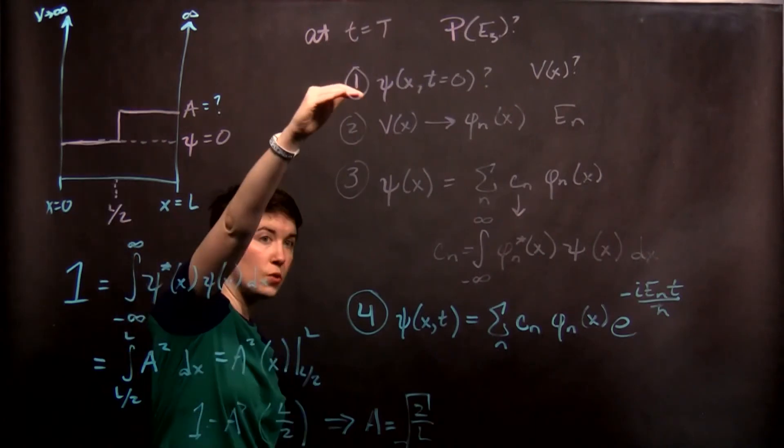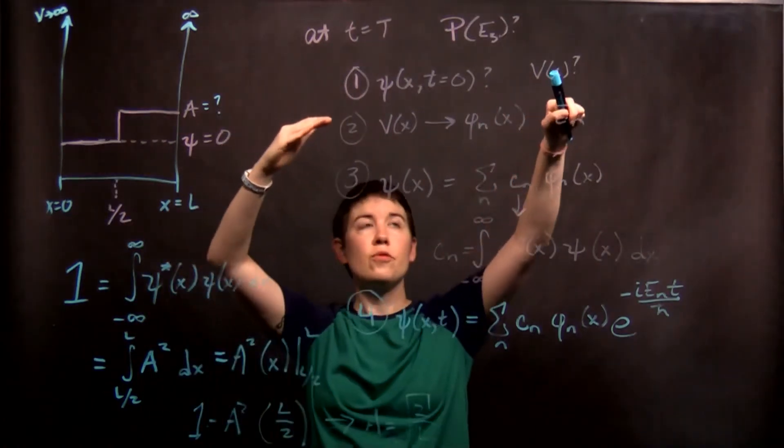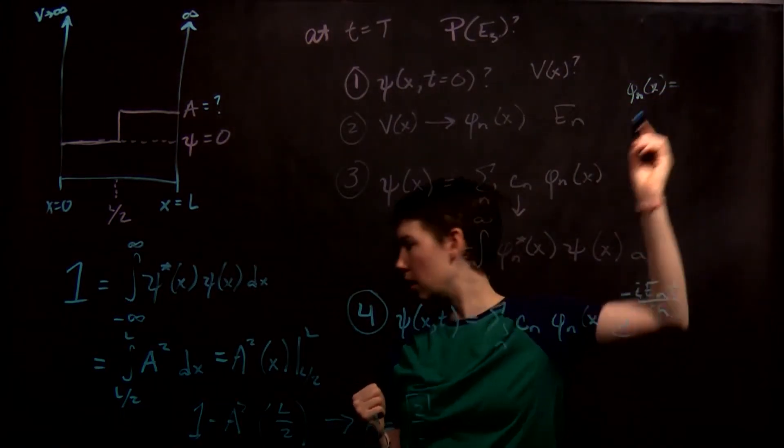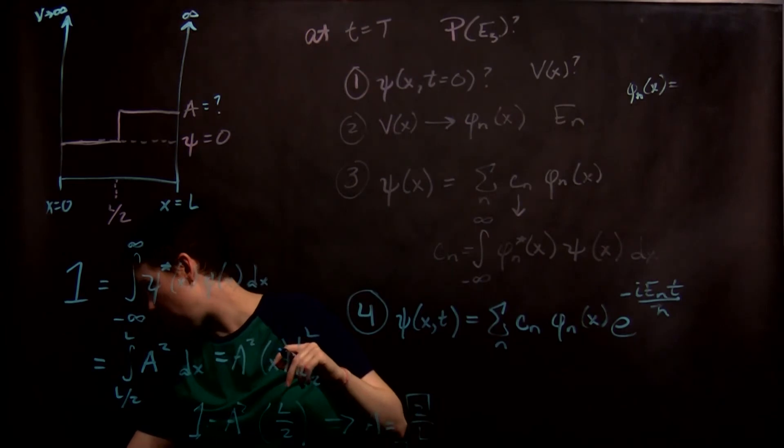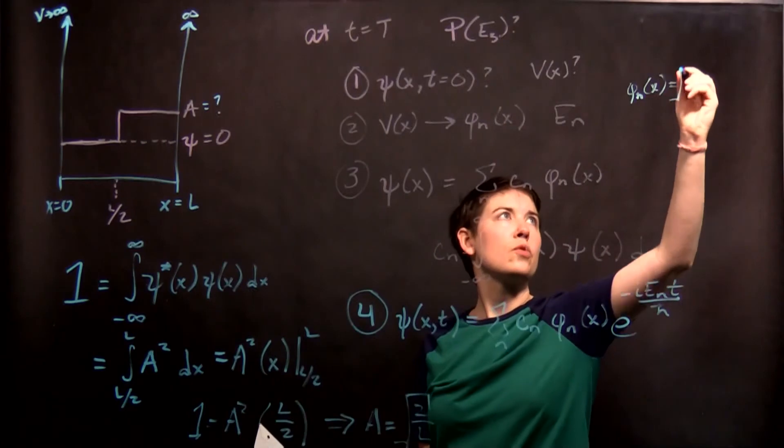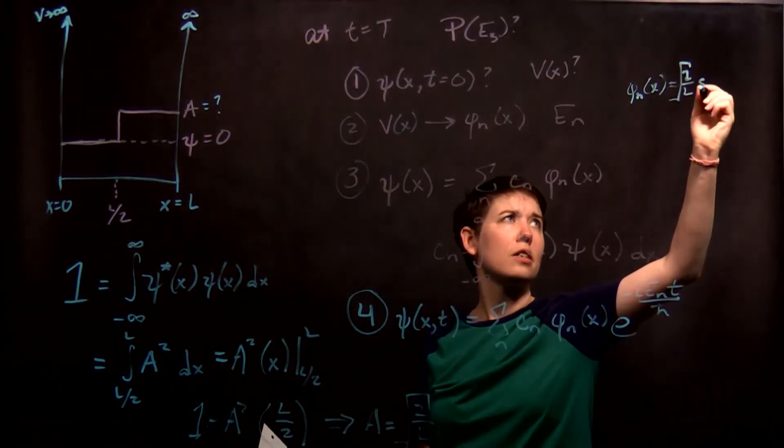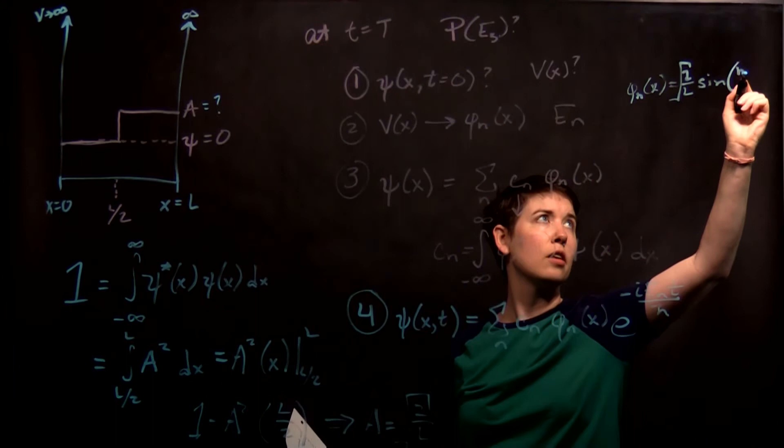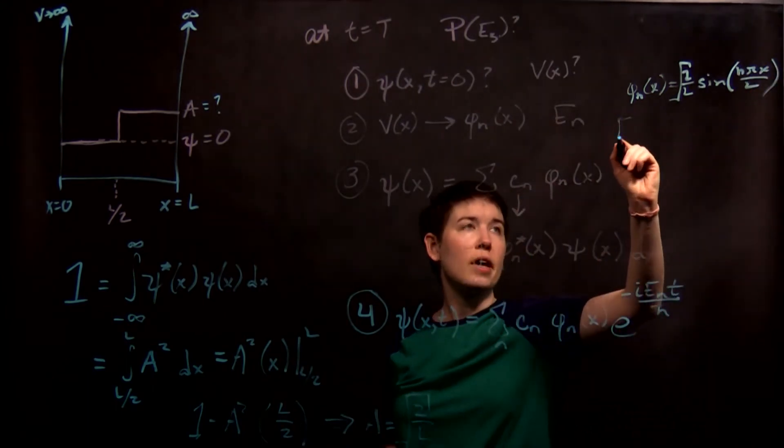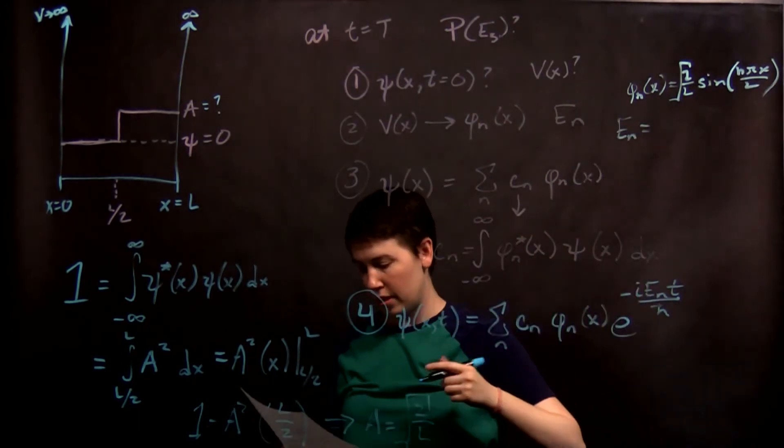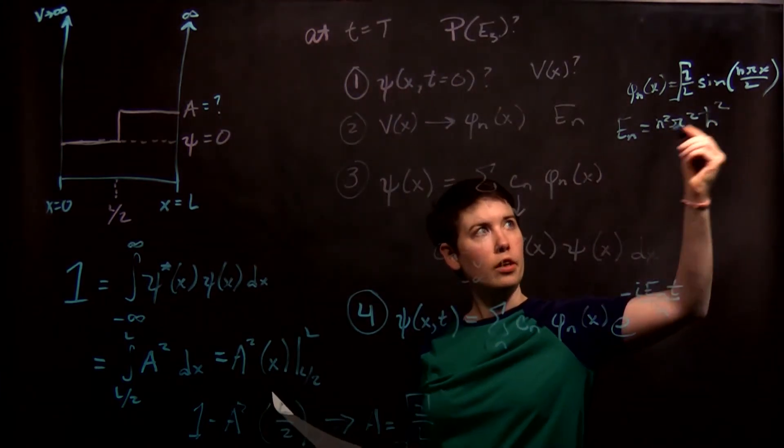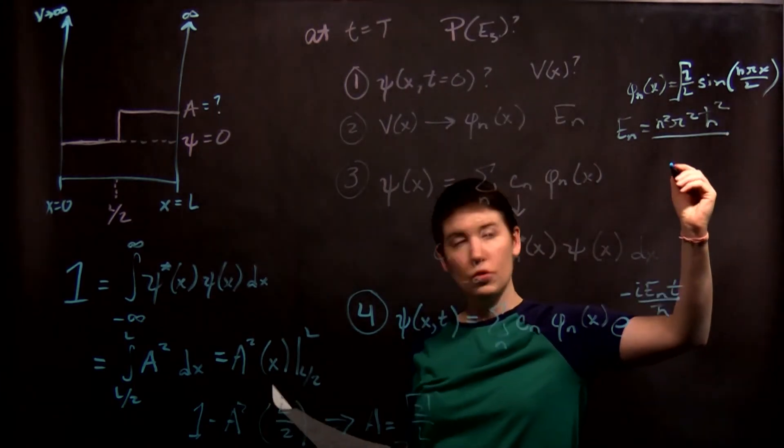So, I've already done this first step, and I know that it's the infinite well, which means that my phi n of x are going to, and I never want to write this down wrong, is going to be square root of 2 over l, sine of n pi x over l. You'll get really sick of writing that down. And then my e sub n, again, and I know this because this is my infinite well, are n squared, pi squared, h bar squared, all over 2ml squared.